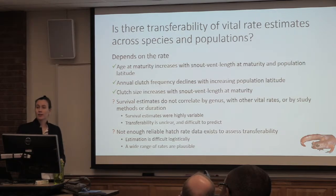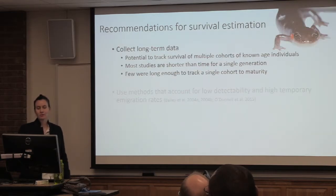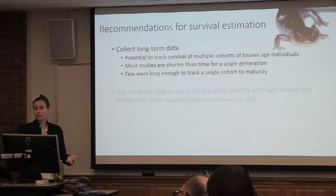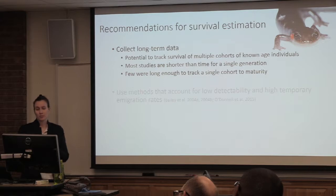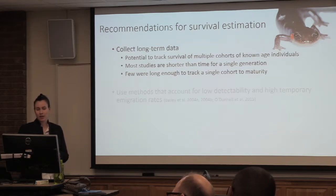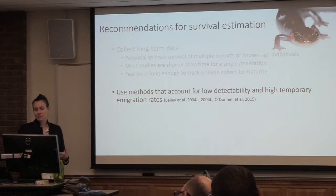It does seem from our isocline analyses that a wide range of hatch rates is plausible, which is interesting. For recommendations on how survival estimation should be done: we should be collecting long-term data, trying to capture how rates change over the lifespan of an organism — at least over a generation time, from when an animal is born until it reaches maturity. We want to track survival of cohorts of known-age individuals. Many studies are shorter than a single generation, and few have been long enough to track a single cohort to maturity. We also want to use methods that account for low detectability and high temporary immigration rates.